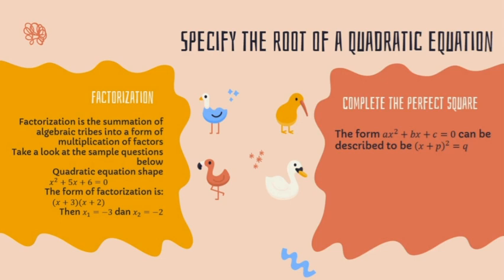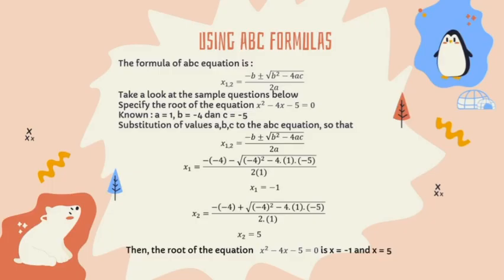To complete the perfect square, the form x² + bx + c = 0 can be rewritten as (x + b/2)² = q. And lastly, using the ABC formula. The quadratic formula is x₁,₂ = (−b ± √(b² − 4ac)) / 2a. Take a look at the sample question: specify the root of the equation x² − 4x − 5 = 0. Here a = 1, b = −4, and c = −5. Substituting these values gives x₁ = −1 and x₂ = 5.